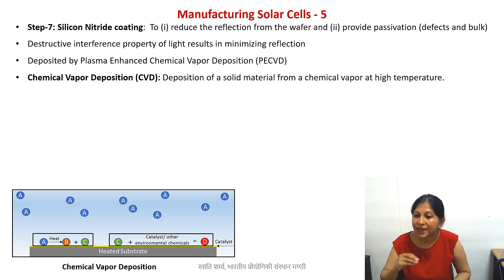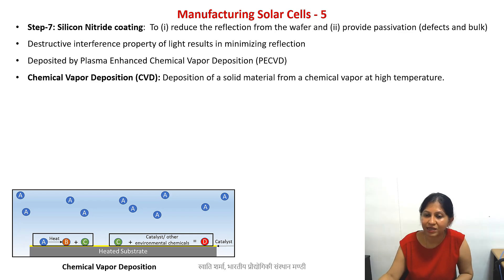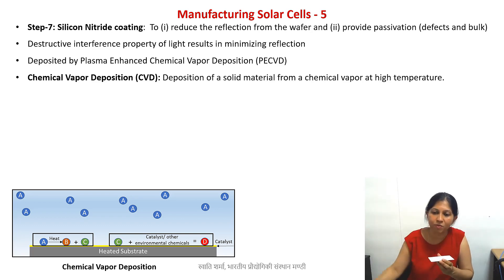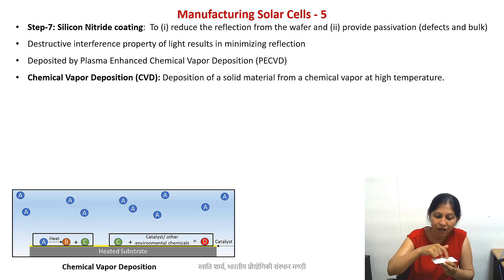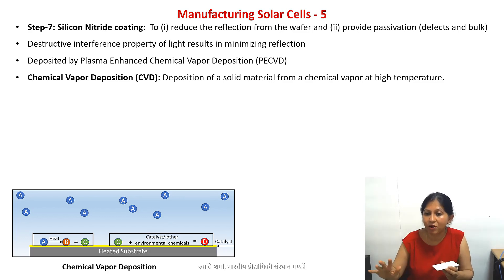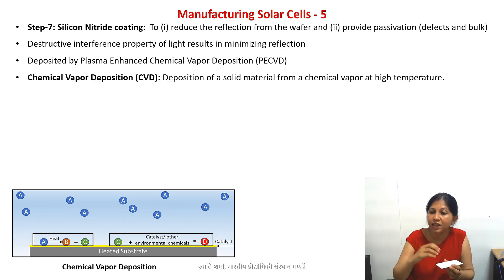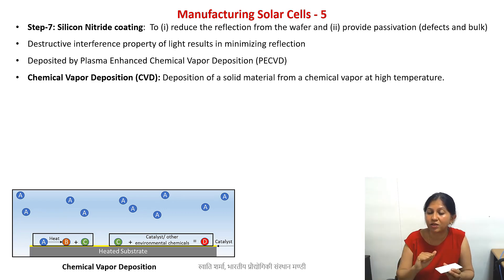For example, material A can split into B and C under certain conditions, such as at a certain temperature. We take a heated substrate and fill the chamber with vapors. On top of the heated substrate, A gets decomposed into B and C. B and C themselves can deposit if that is the reaction type. Sometimes C also reacts with the chemical vapors and gives another chemical D, and then we have a film of D deposited on the surface.